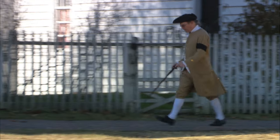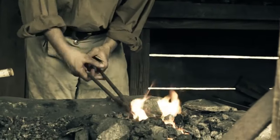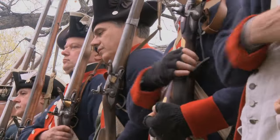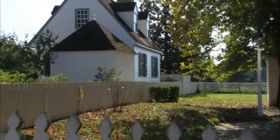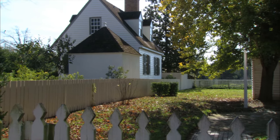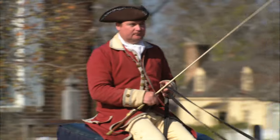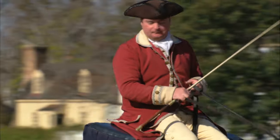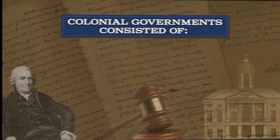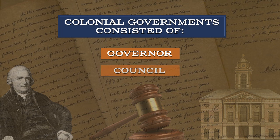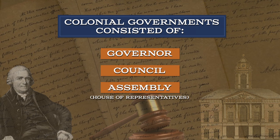By 1752, a representative form of government was established by all of the colonies. Each colony had its own history and developed in different ways. However, despite these differences, common features and patterns emerged in their governments. Colonial governments consisted of a governor, a council, and an assembly or house of representatives.